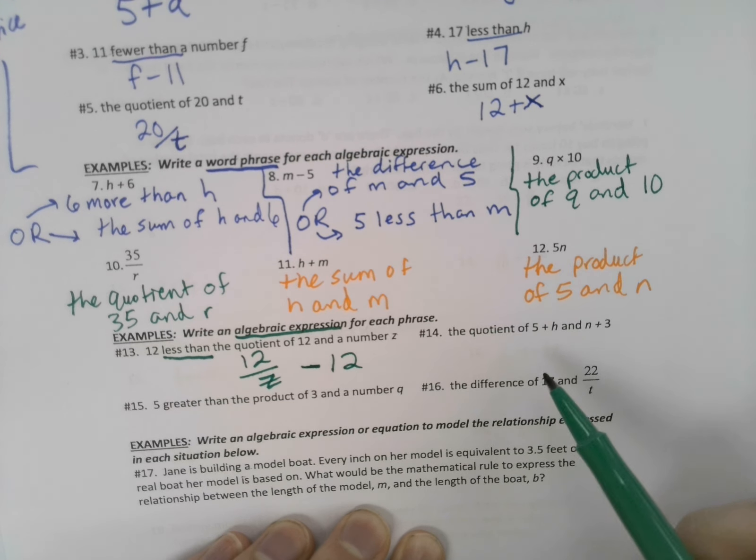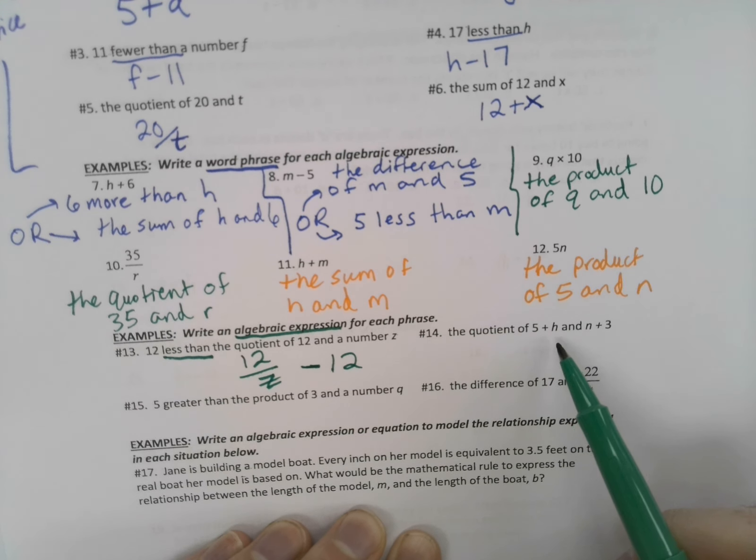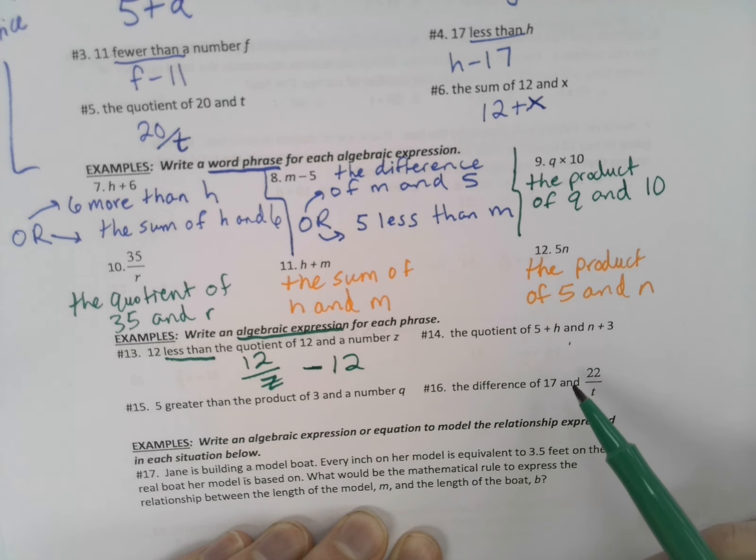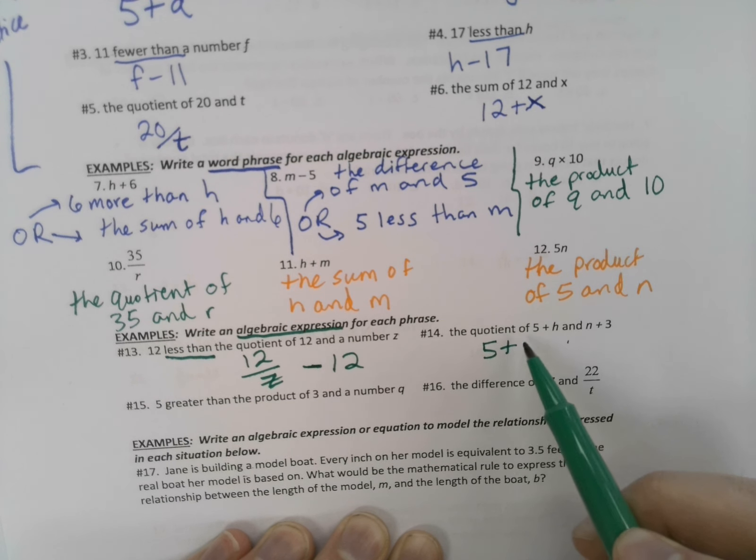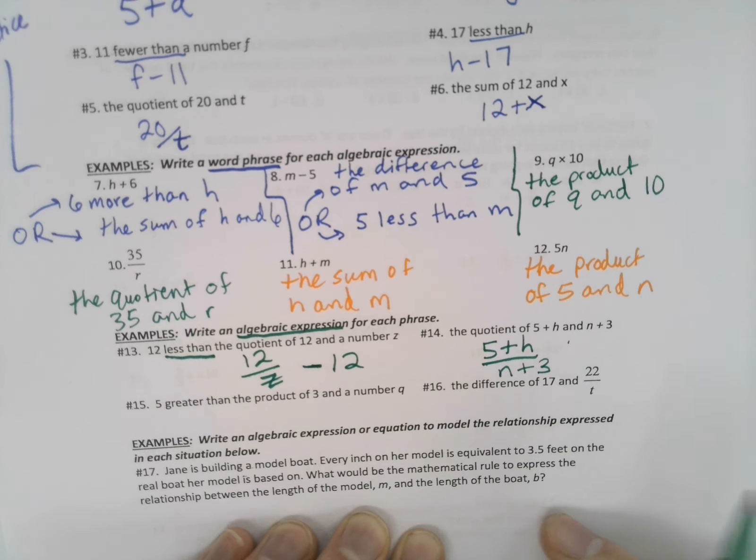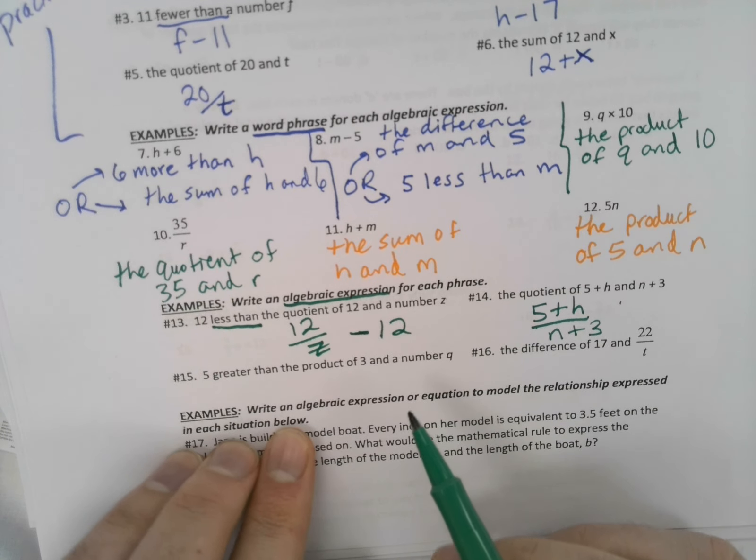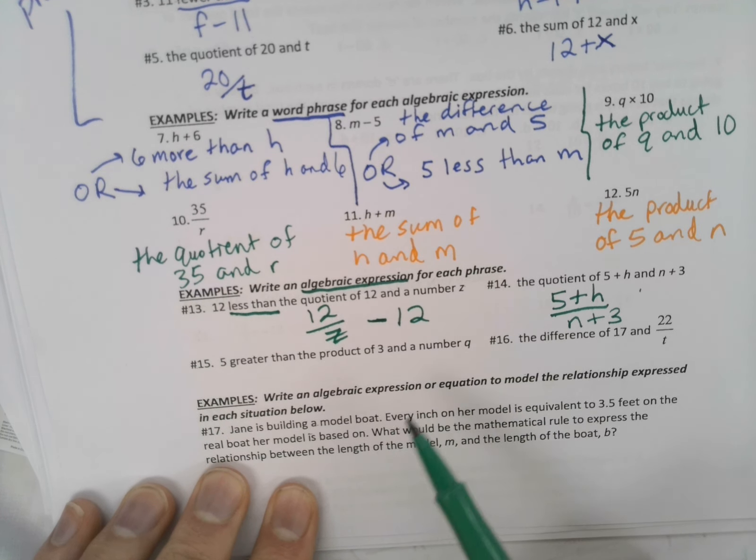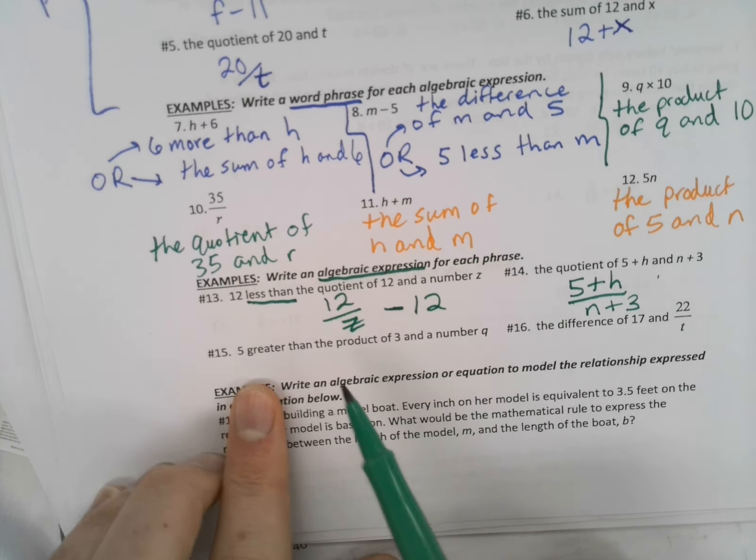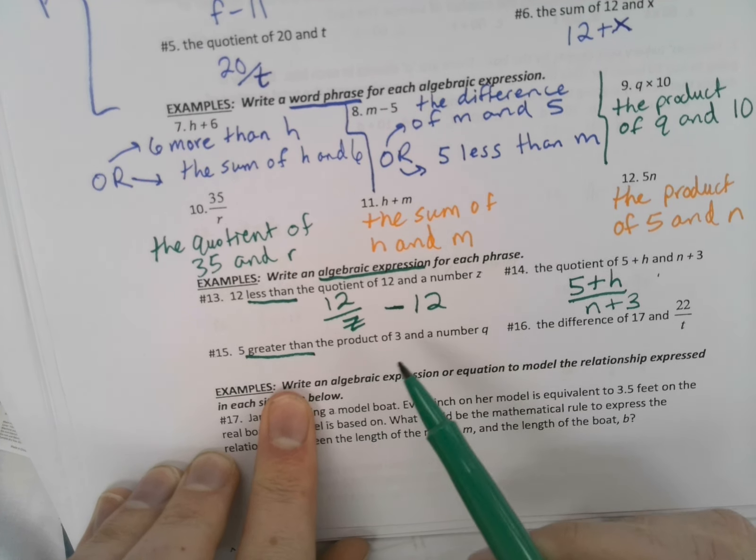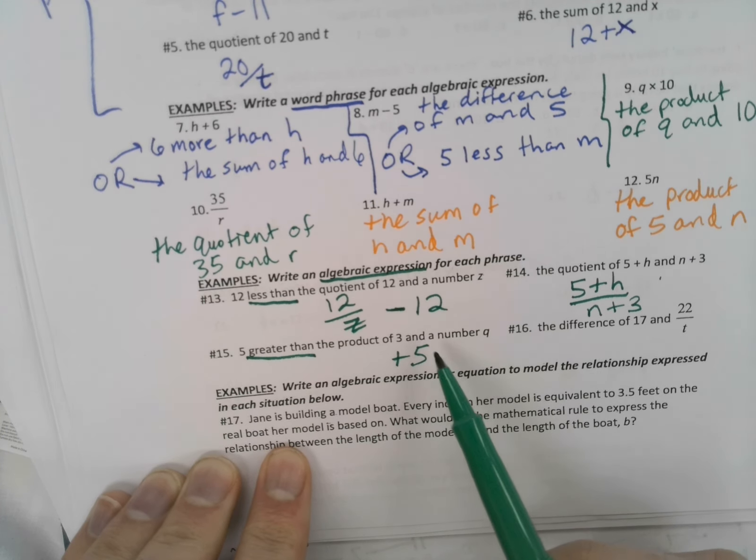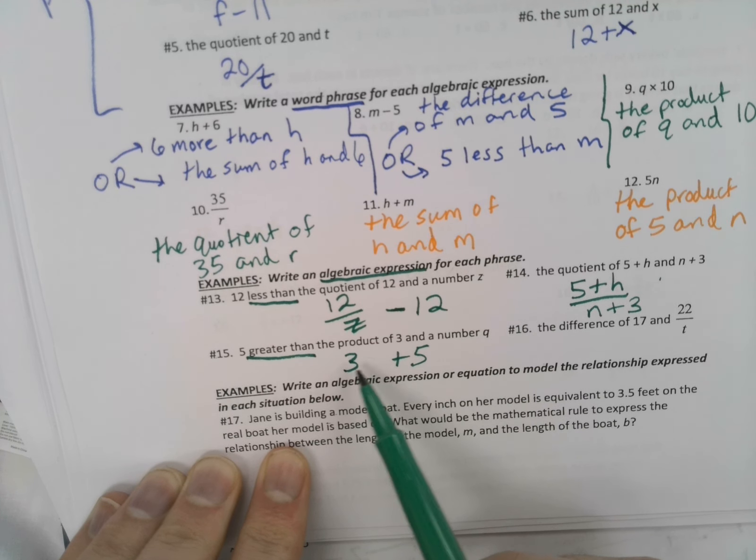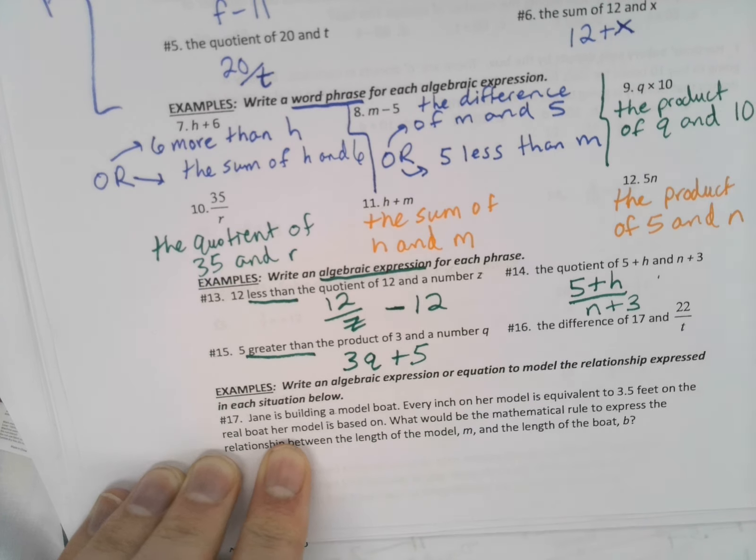How about number 14? This one's kind of interesting. The quotient of 5 plus H and N plus 3. So we're not dividing one term by one term. We're dividing two terms by two terms. But the good news is that's just one operation. We take this and divide it by that. These next couple are going to see us doing a couple operations, though, potentially. I think number 16 might just be one, but number 15 is definitely two. So we're talking 5 greater than. So I know I'm adding 5 to something. Well, what are we greater than? What did we start off with? Well, the product of 3 and a number Q. So 3 product means multiply times Q plus 5.